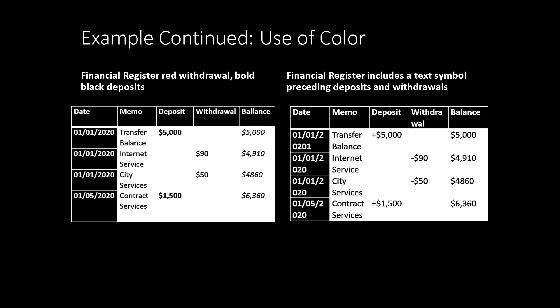Continuing the example, here we have a grayscale version of the same data. The table on the left previously had deposits in black and withdrawals in red. This is how an individual who is unable to perceive the color red may still access the content — the withdrawals are no longer as evident. The table on the right, still in grayscale, demonstrates how adding plus and minus symbols helps draw attention to the data. This also assists individuals using screen reading technology, as they are likely to hear the announcement of the plus or minus to understand whether data is being added or subtracted.